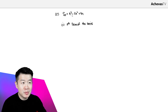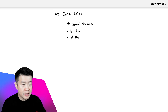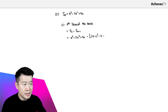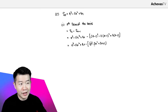We are given that the sum of the first N terms is N cubed minus 11N squared plus 4N. We want to find the Nth term of the series, and that can be found by taking SN minus S(N-1). This gives N cubed minus 11N squared plus 4N, minus the expression with N replaced by (N minus 1): minus [(N minus 1) cubed minus 11(N minus 1) squared plus 4(N minus 1)].